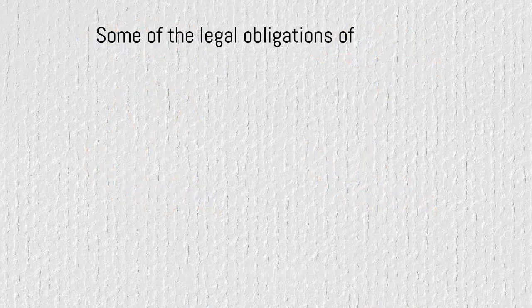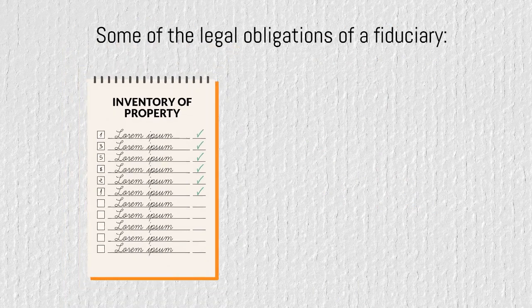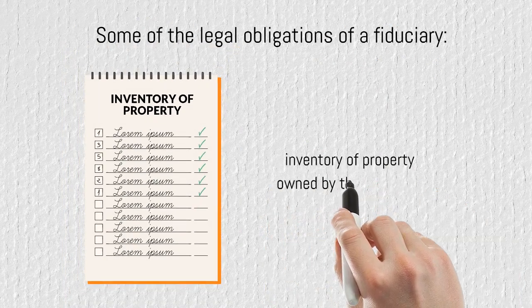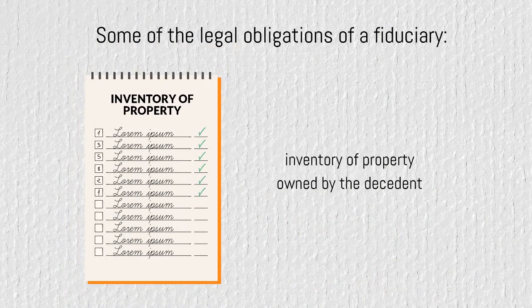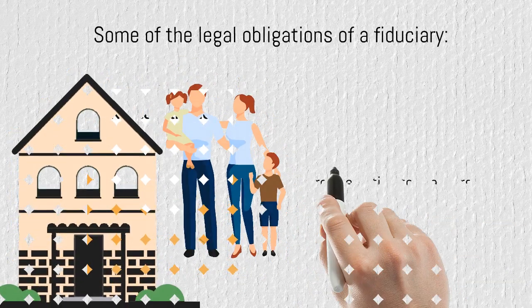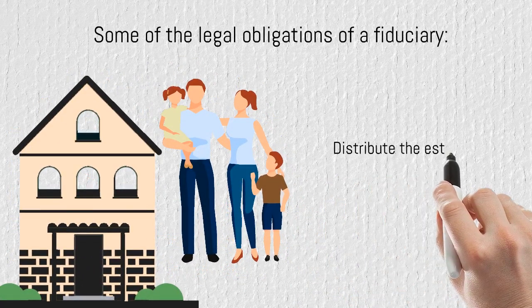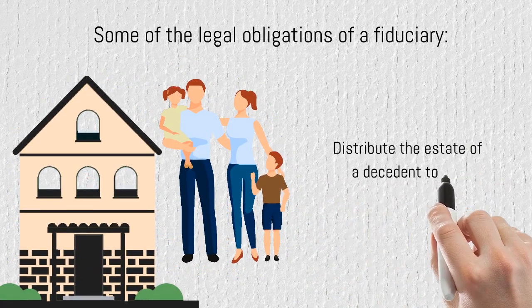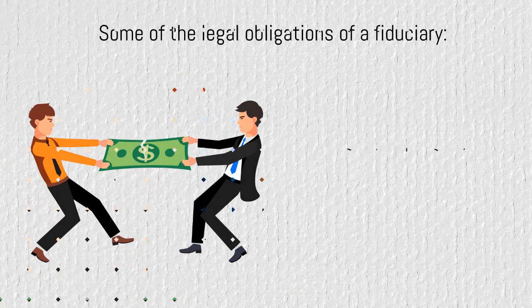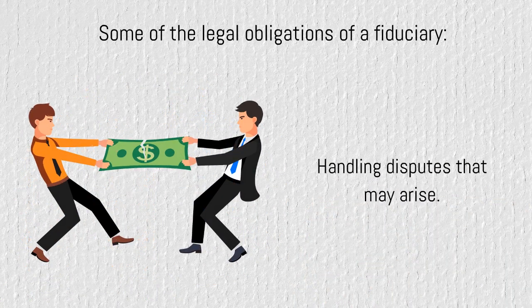Some of the legal obligations of a fiduciary are as follows: prepare an inventory of property owned by the decedent at the time of his or her death; provide notice to the heirs; distribute the estate of a decedent to the rightful heirs; and handle disputes that may arise.